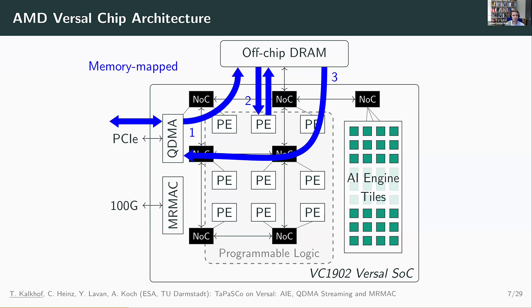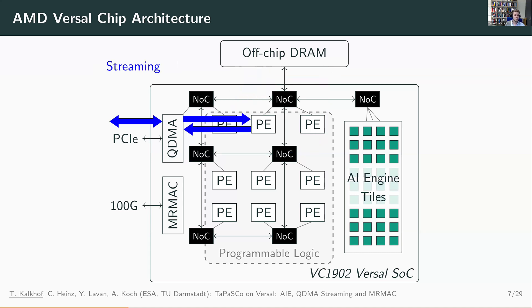You could use this platform in the conventional memory-mapped way: first copy data from host memory into off-chip DRAM, then your PE reads data from DRAM, processes it, writes results back, and finally the DMA engine moves data back to host memory. However, what we want to push with our framework is that you use streaming also for DMA — you directly stream data from the DMA engine into your PE, process the data, and stream the results back to host memory without the intermediate step over off-chip DRAM. This matches well with the other components, since it's easy to stream data from programmable logic into the AI engines, and network communication is streaming-based by nature.